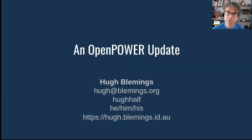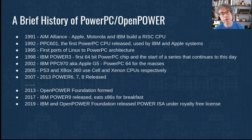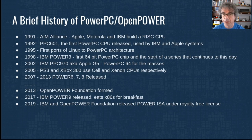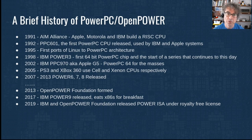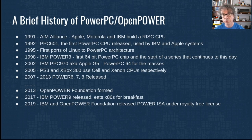Hi, my name's Hugh Blemings, and I'm going to provide a bit of an update on OpenPower. I gratefully acknowledge I'm presenting on the traditional lands of the Gudjichmara people, and I pay my respects to their elders past, present, and emerging. A brief history: 1991 saw the start of PowerPC with Apple, Motorola, and IBM coming together to build a RISC CPU. The first product was the PPC-601 in 1992. In 1995, we saw the first ports of Linux to the PowerPC architecture, followed by 1998 when IBM released the Power3 — the first 64-bit PowerPC chip, and the start of a series that continues to this day.